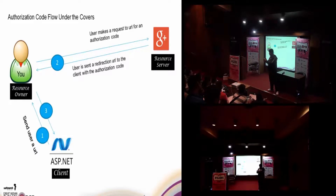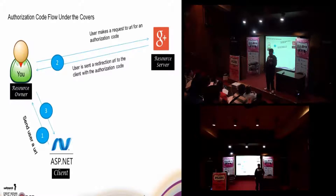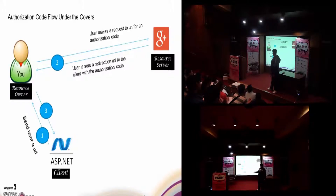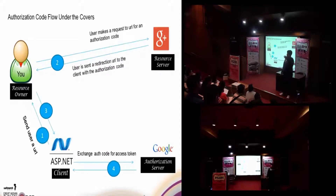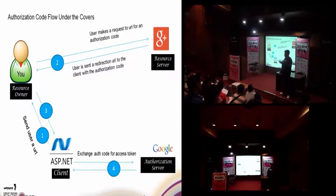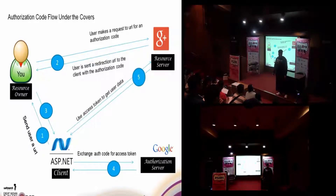Once this authorization code is received, this is not your ticket — it's not the client's ticket to get the information it needs. The client has to exchange this authorization code for something called an access token. An access token is the token that will give you the data. The access token is obtained from another entity called the authorization server. So the client makes another call to the authorization server, exchanging the authorization code for an access token. The final step is the client sends this access token back to the resource server to get the data it needs.